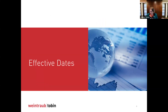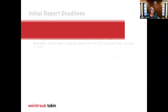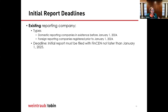There are a variety of effective dates applicable, depending upon when the legal entity was formed. For existing reporting companies — entities created before January 1st, 2024, or foreign reporting companies that registered to do business in the United States prior to January 1st, 2024 — the initial report with FinCEN must be filed no later than January 1st, 2025. You've got the rest of this year to either file reports or collect the data with an eye towards complying with that date.